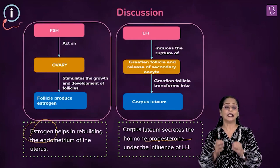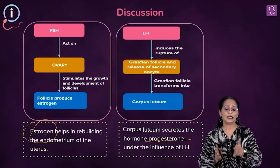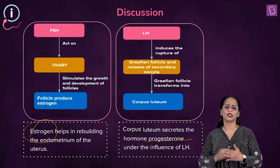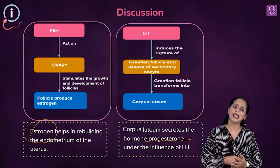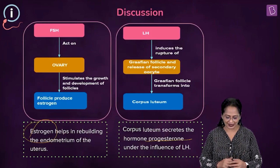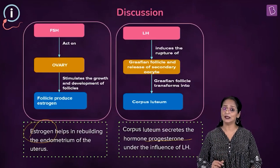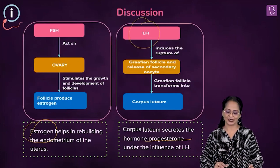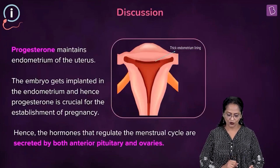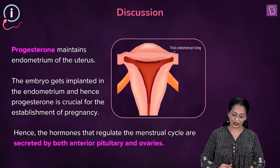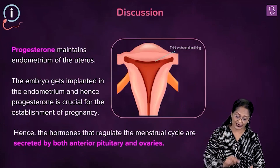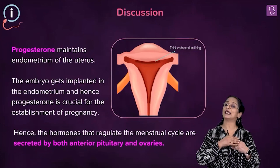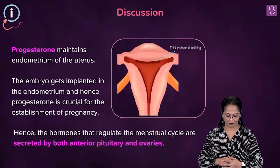Progesterone is commonly called the pregnancy hormone because it helps in maintaining pregnancy. It prepares the endometrium of the uterus — the wall of the uterus — for a possible implantation of the embryo. All this takes place under the influence of progesterone, triggered by luteinizing hormone. Progesterone helps in maintaining the uterus; the embryo gets implanted in the endometrium, and hence progesterone is crucial for the entire period of pregnancy.